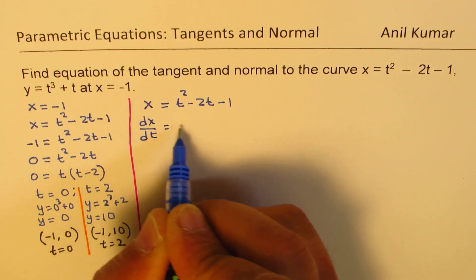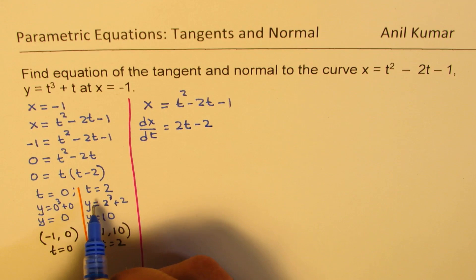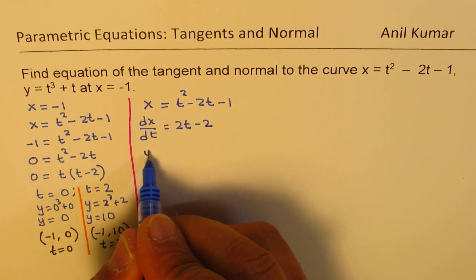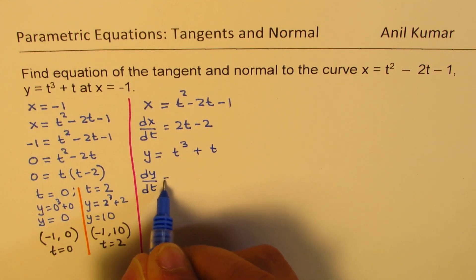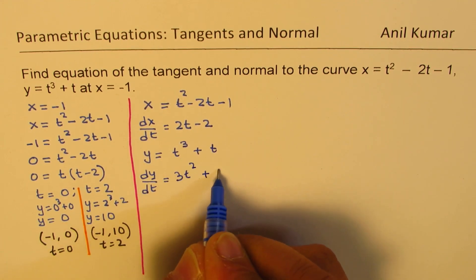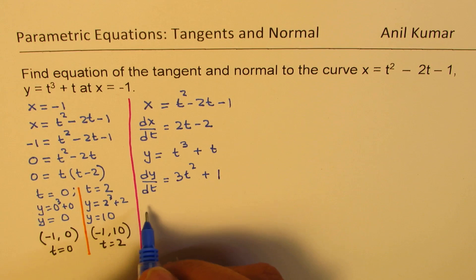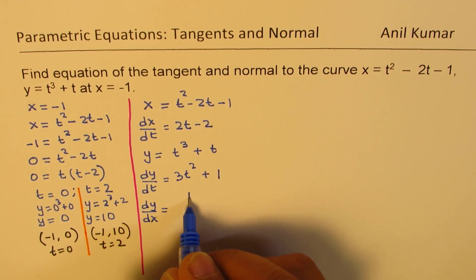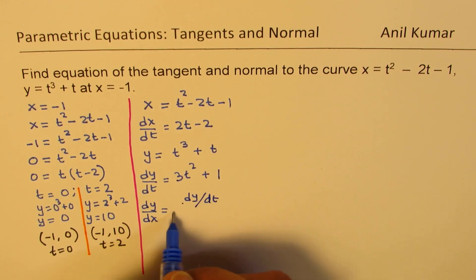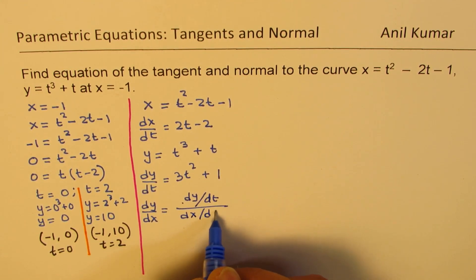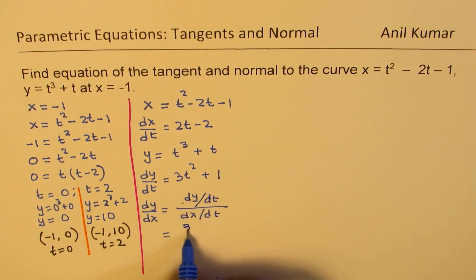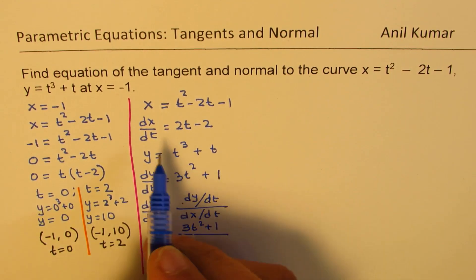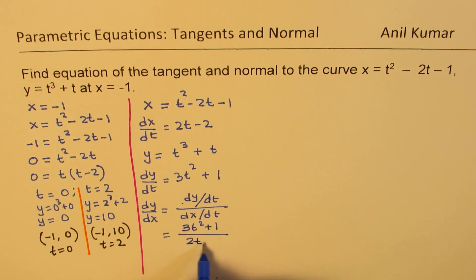dx/dt equals 2t minus 2. Now let's find dy/dt. Since y equals t cubed plus t, dy/dt equals 3t squared plus 1. Now dy/dx equals dy/dt over dx/dt, which gives us the expression: dy/dx equals (3t squared plus 1) over (2t minus 2).